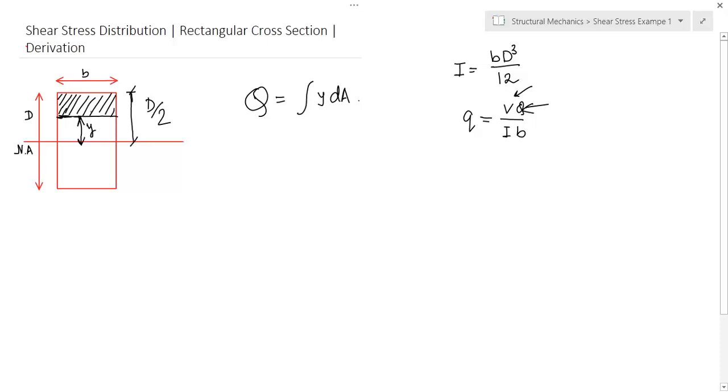What is the first moment of this area? This area is area of this shaded region into its CG distance from the neutral axis. So, what is this area? B into this distance is d by 2 minus y.